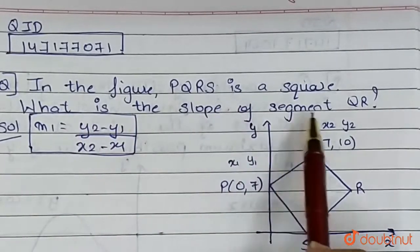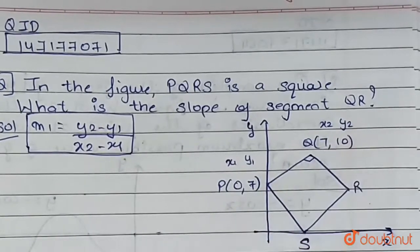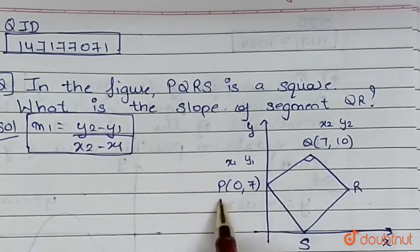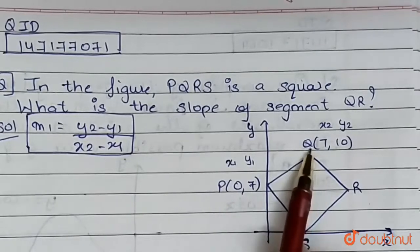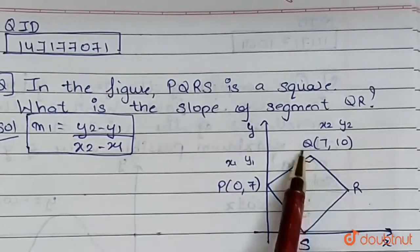Okay, so we know that the given figure PQRS is a square, and the coordinates of P are (0,7) and coordinates of Q are (7,10). Now we have to find the slope of QR.